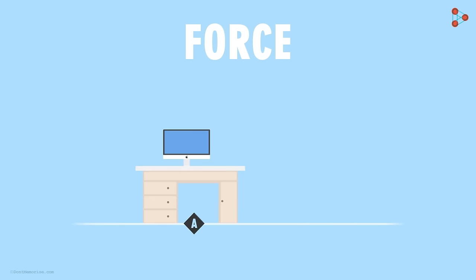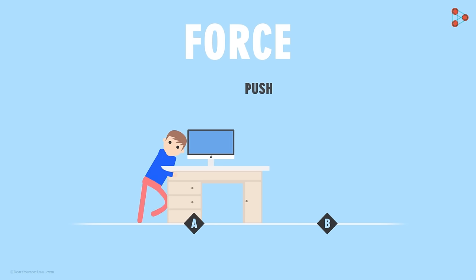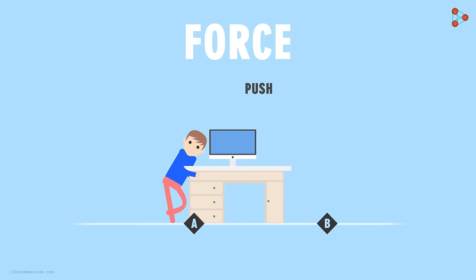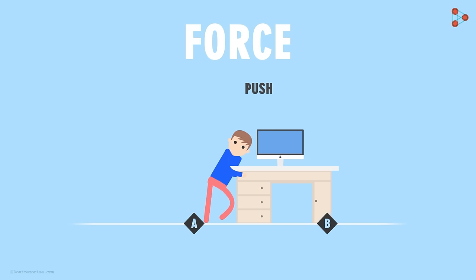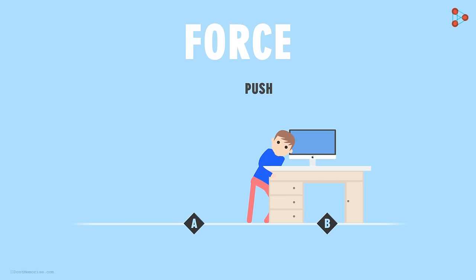Now suppose that we have a desk here at point A. A person wants to move this desk from point A to point B. He will push the desk towards point B. In this case, we say that the person applied a force on the desk in order to shift it. The push here is the force that the person applied on the desk.